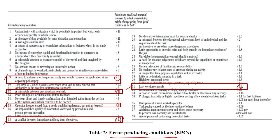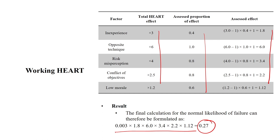With those multipliers and assessed effects, the final calculation for the nominal likelihood of failure can therefore be 0.27. So that is the working HEART — we call it 'working HEART' because during further analysis something can change or a situation can alter. That is why we always call it working HEART, not the final HEART calculation.